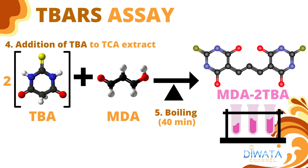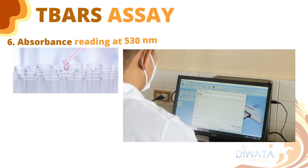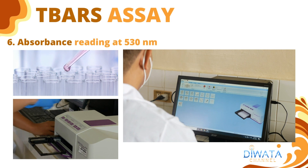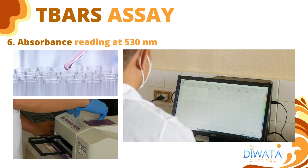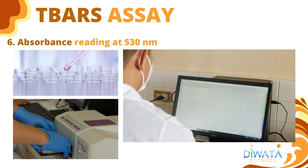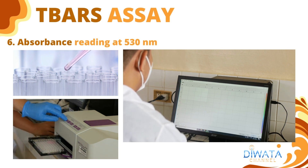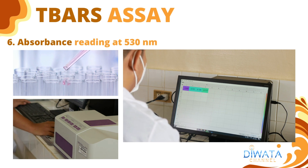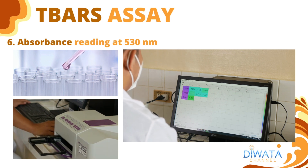The addition of 2-thiobarbituric acid, or 2-TBA, in our TCA extract, catalyzed by heat in acidic condition, allows spontaneous reaction of TBA and aldehydes to produce a pink-colored condensation product of MDA-2-TBA complex that can be measured by a UV-visible spectrophotometer. The absorbance values of our samples with a known MDA concentration can be used to calculate MDA concentration by standard curve determination, and then measuring TBARS, or TBA value, which corresponds to micromole MDA per kilogram sample.